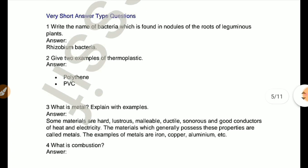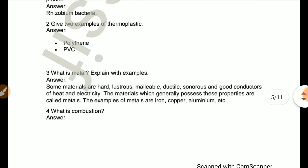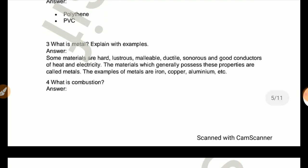Very short type questions. Write the name of bacteria which is found in nodules of the roots of leguminous plants. Rhizobium bacteria. Give two examples of thermoplastic: polythene and PVC.